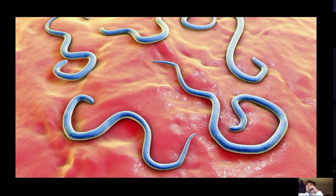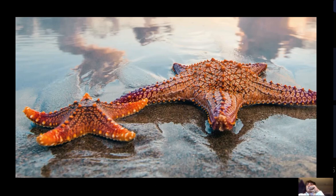An example of an invertebrate that reproduces asexually are starfish. And an example of an invertebrate that reproduces sexually are crabs.